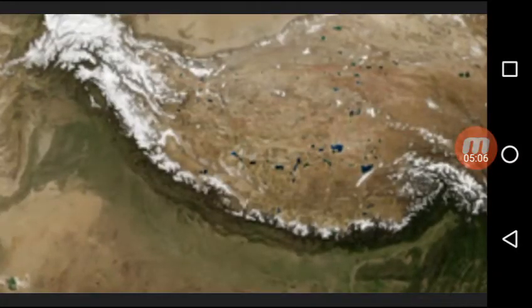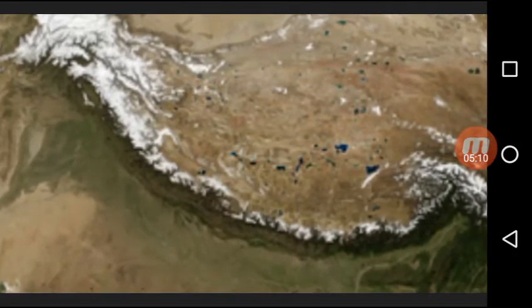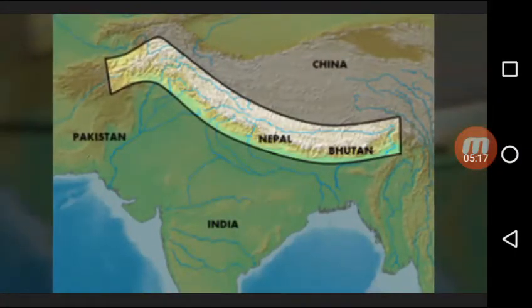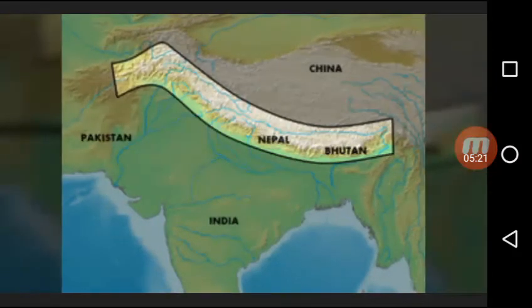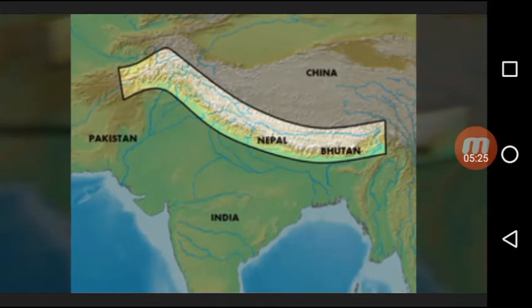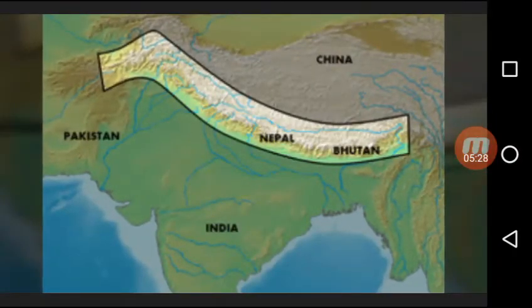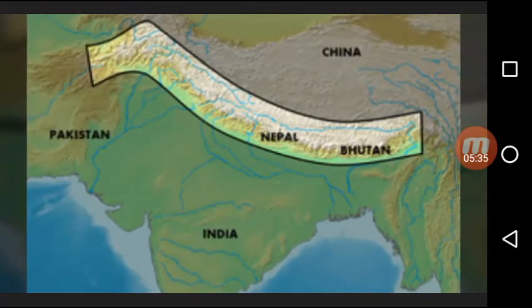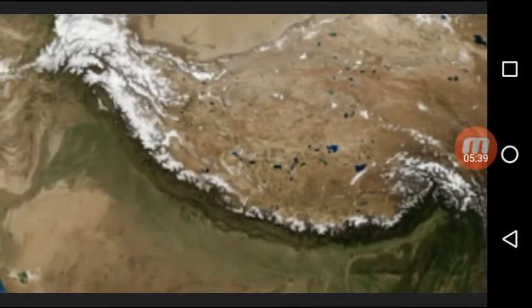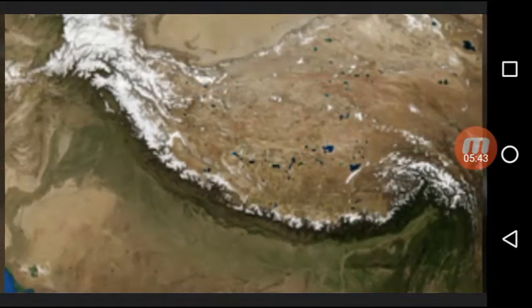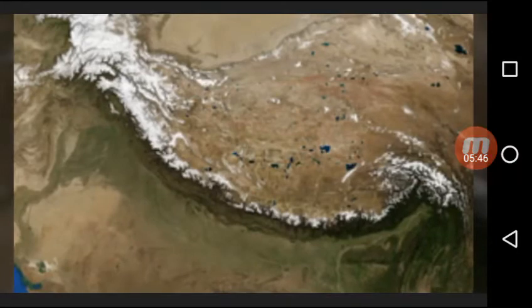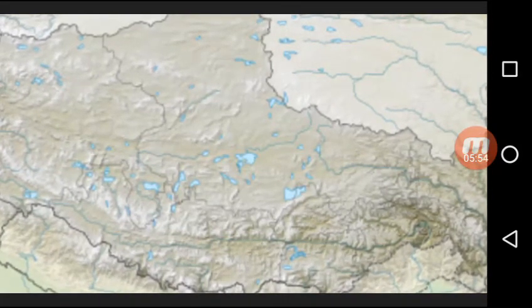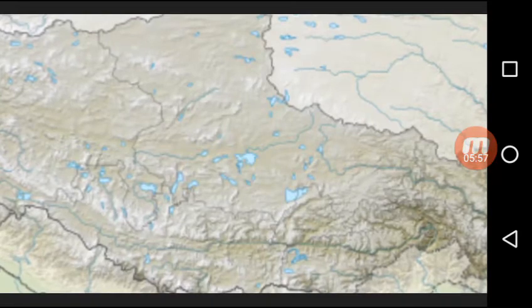El Niño is a narrow warm current which occasionally appears off the coast of Peru in December, temporarily replacing the cold Peru current. The warming of tropical Pacific waters affects the global pattern of pressure and wind systems, including the monsoon winds in the Indian Ocean. La Niña is the reverse of El Niño and is a harbinger of heavy monsoon rains in India.